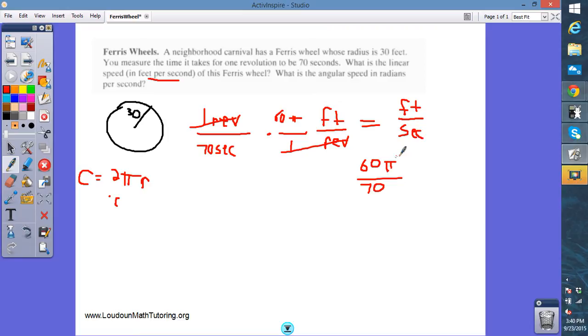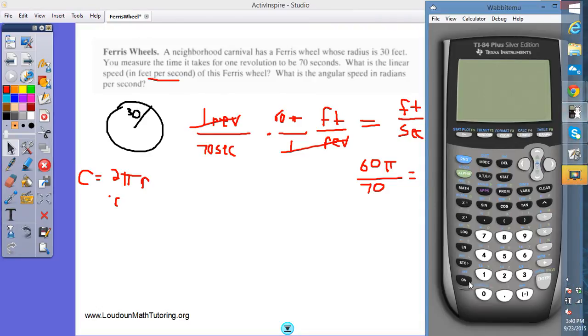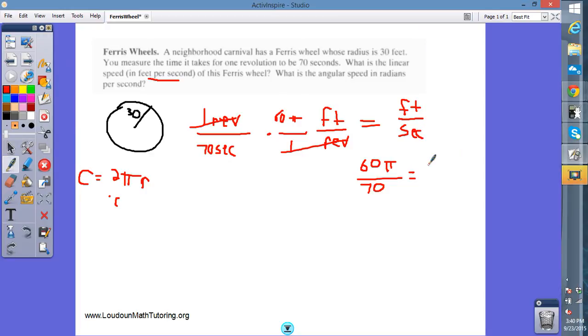You know, in real world, no one ever says 60π over 70 is a number, so there's a good place now we can approximate that with a calculator. 60π over 70 is approximately 2.7 feet per second. When you're turning in your problem to your teacher, make sure you put your units on there. 2.7 feet per second. That is the linear speed. That's the speed at which if the ferris wheel came unhooked and traveled down the road, it'd be going 2.7 feet per second.